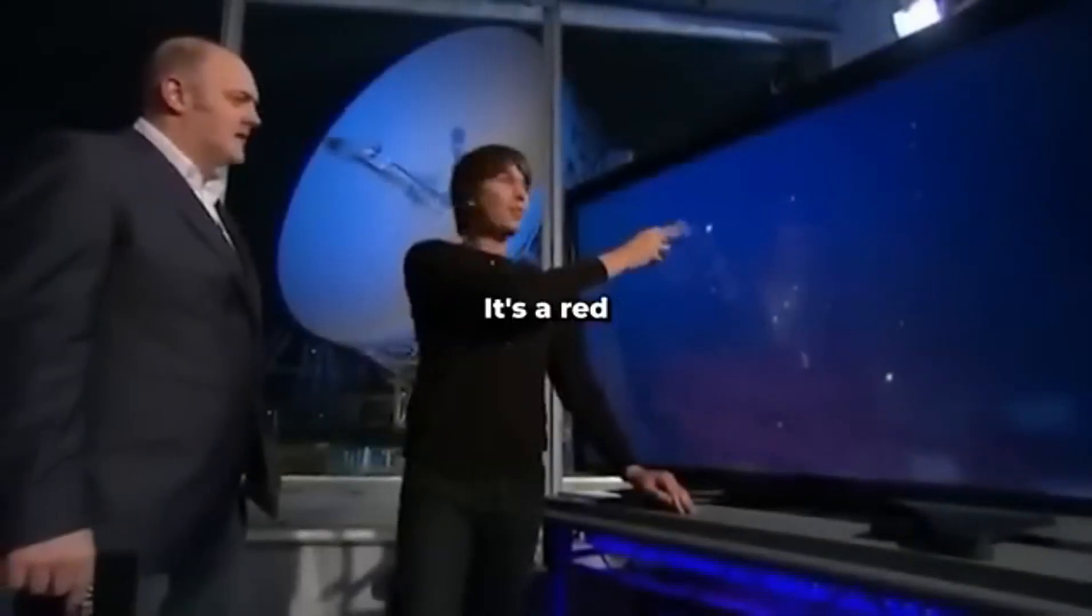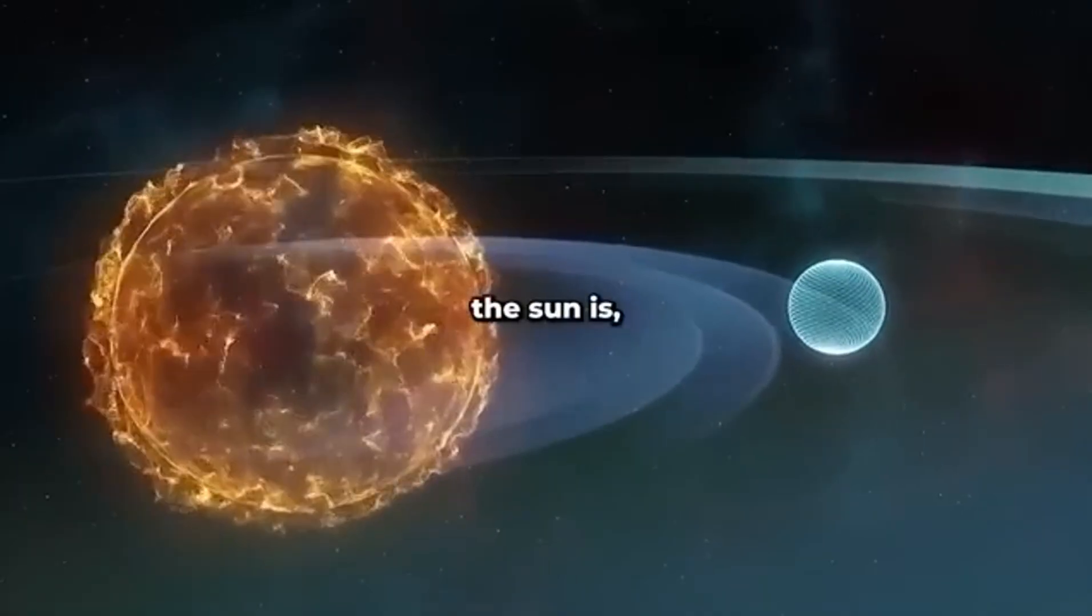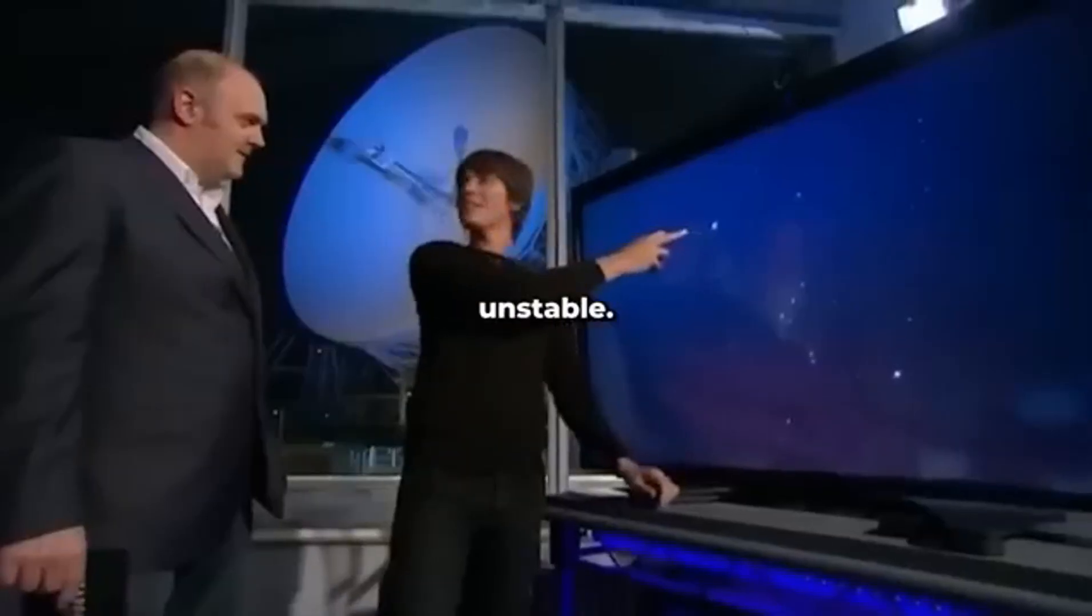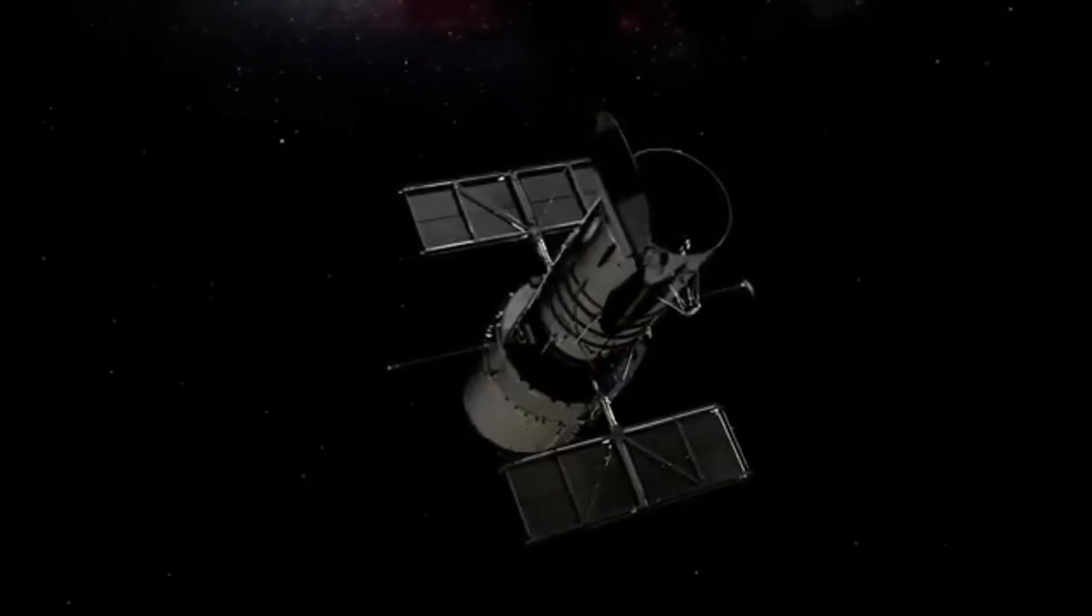Betelgeuse, it's a red giant star. If you put it where the sun is, it would extend out to the orbit of Jupiter. It's enormous. It's very unstable. It's about to explode.